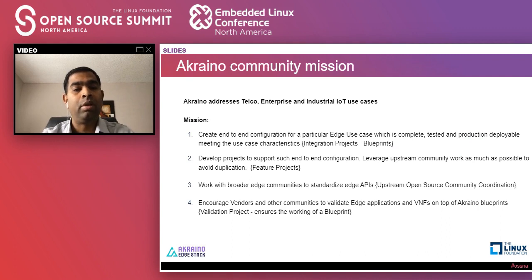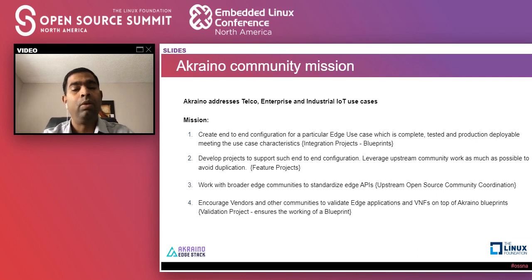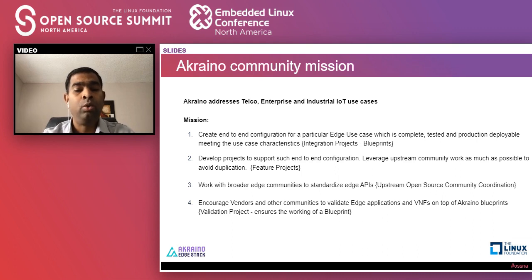You can see the mission of Acreno Edge Stack — there are four key items this community is focused on. One is to provide an end-to-end stack by taking different open source projects and doing development with respect to the Acreno stack, bringing a cohesive edge solution for deployment — we call this collectively a blueprint. We also have projects that specifically enhance features in the components that go into the edge stack, including security scanning and automated deployment tools and operational tools — we call them feature projects.